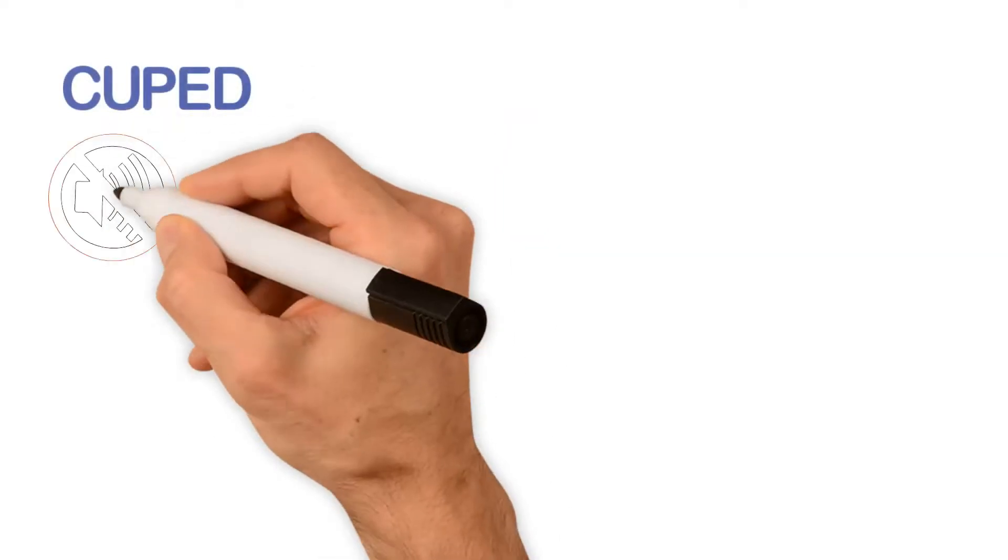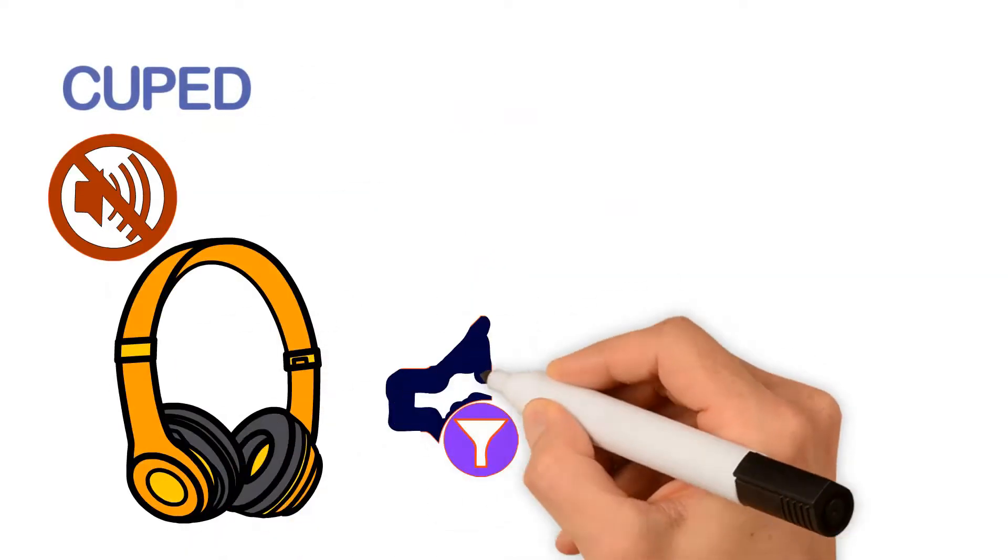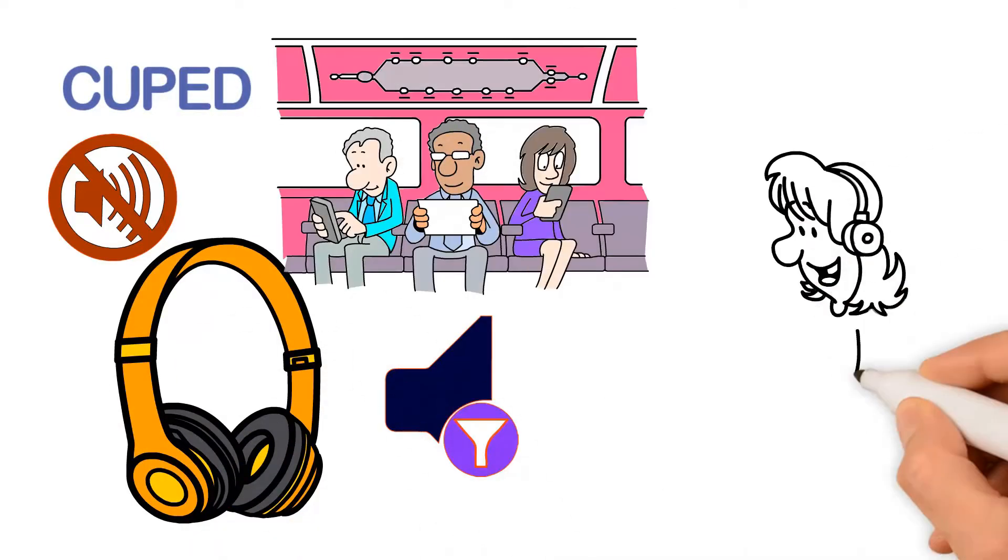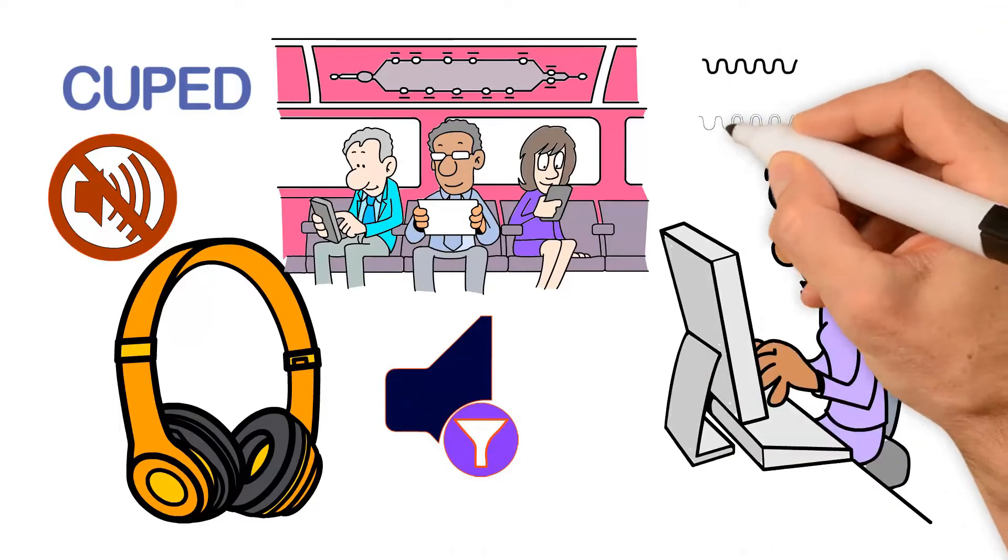CUPID works a bit like noise-canceling headphones. The goal is to filter out ambient noise so that you are able to hear the signal with more clarity.